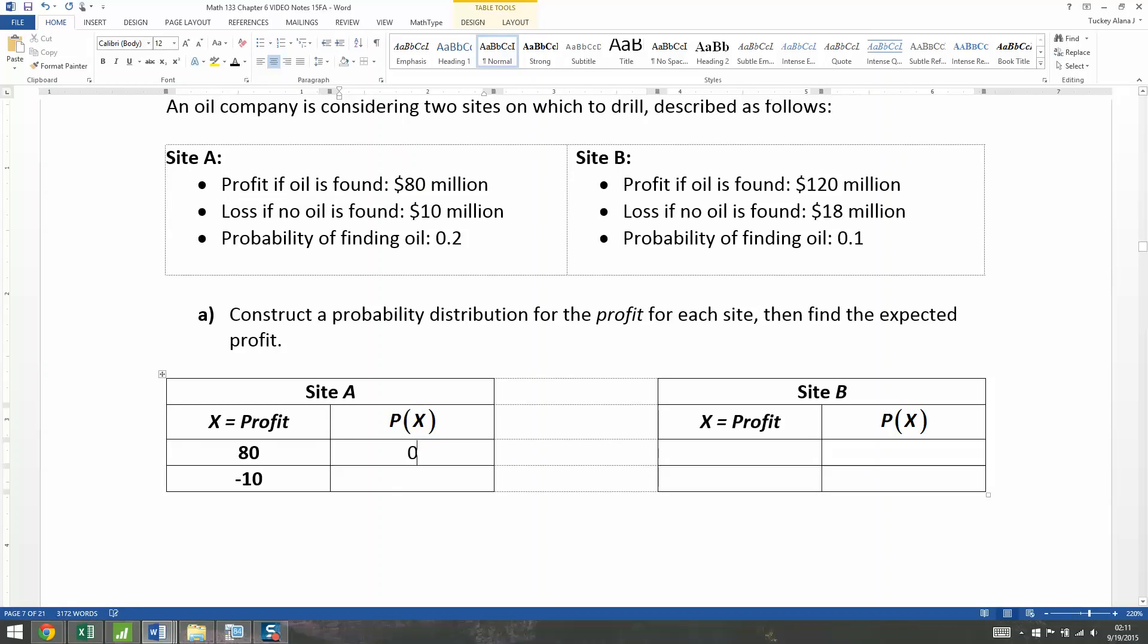The probability of finding the oil is 0.2. Well, you either find oil or you do not find oil. Those are your only options. So the probability for not finding oil would be 1 minus 0.2, which is 0.8. They're complements of each other. Remember the complement rule? And actually, let's make a note right up here about the negative.